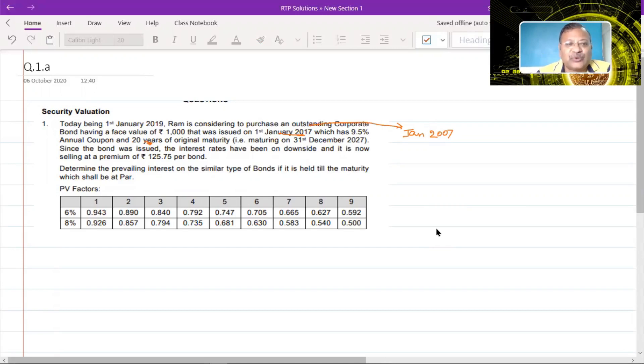Since the bond was issued, the interest rates have been on the downside, which means the interest rates have been going down. Now if you remember the relationship between the interest rate and the bond prices, if the interest rates are going down, then the bond prices obviously would have gone up. So they say it is now selling at a premium of 125.75 per bond, which means the current market price of the bond is 1000 plus 125.75, which is 1125.75.